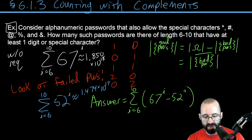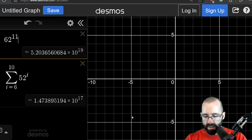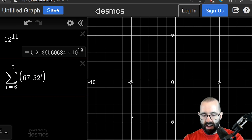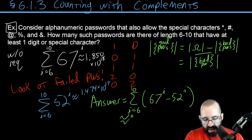And whether you subtract out those numbers directly or use this formula over here, you should get the same answer. But if we write this as—I'm going to use parentheses here—67 to the i'th minus 52 to the i'th, we get 1.703 times 10 to the 18th.